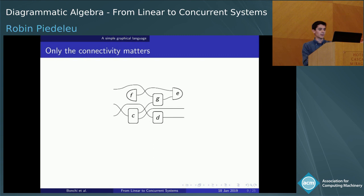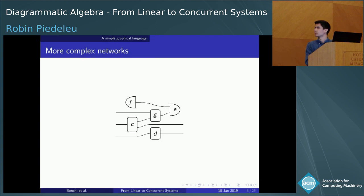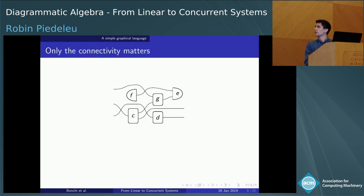The slogan here is that only the connectivity should matter. We want our diagrams to be insensitive to how these networks are drawn in the plane. For those familiar with this, this means we can cross wires — we're essentially working in a symmetric monoidal category. Those crossings behave in the way you'd expect, and the crossing is interpreted as a simple swap operation.